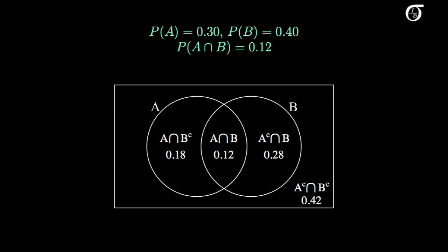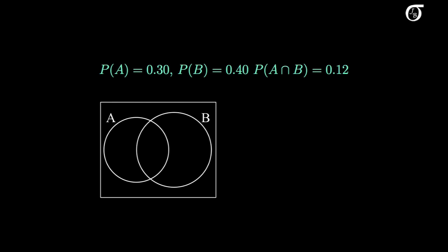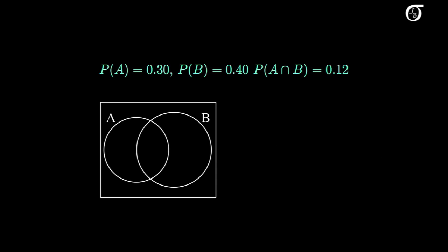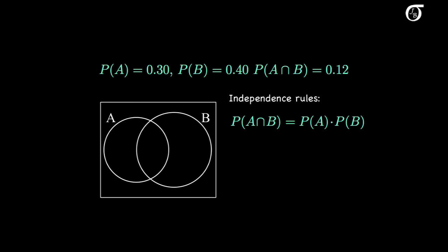But what if the sizes of the circles did have meaning? Here's a similar plot, only the area of the rectangle is 1, and the area of each circle equals its probability of occurring. So the area of the circle on the left is 0.3, and the area of the circle on the right is 0.4. The area of the intersection is 0.12. Recall the independence rule: A and B are independent if and only if the probability of the intersection equals the product of the individual probabilities. Here A and B are independent, and the intersection has an area equal to the product of the areas of the two circles.